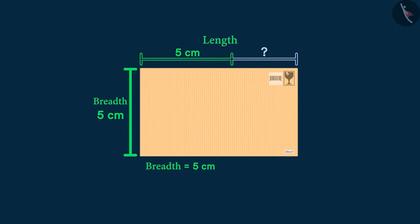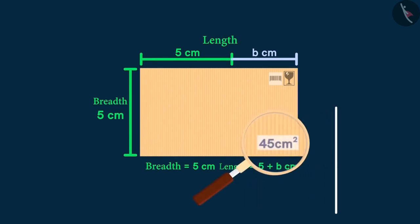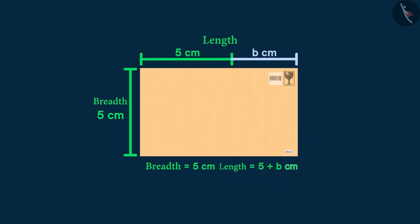Let's help him. We know that the breadth of the parcel is five centimeters and the length is longer than five centimeters, so we can write the parcel's length as 5 plus b centimeters. We also know the area is 45 square centimeters. We know that the area of a rectangle is length times its breadth, so we can form an equation with its area like this.